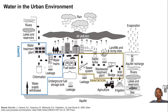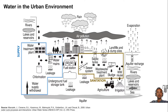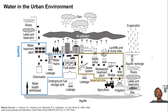Once this water is used, we end up with wastewater — polluted water that must be dealt with, because we can't simply discharge it into a nearby river or lake; it would pollute our environment and threaten different ecosystems. We've developed measures to collect, treat, and dispose of this waste, whether back into rivers, lakes, or pumped into the ground.